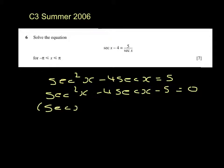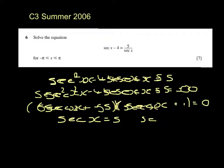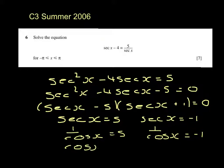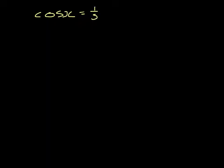I'm factorizing: sec x minus 5, sec x plus 1 equals 0. It tells me that sec x equals 5 or sec x equals minus 1. Sec x is 1 over cos x. So I'm left solving the two equations: cos x equals 1 fifth or cos x equals minus 1.